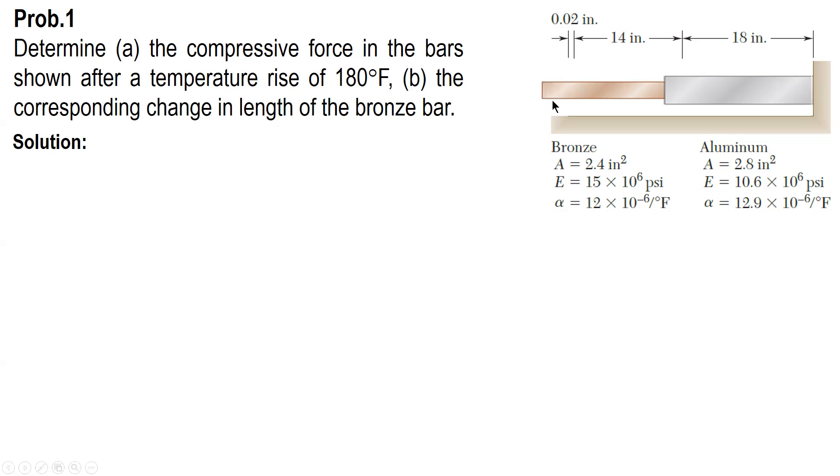So, from the initial position of the bronze bar here, the increase in length is delta T or deformation due to change in temperature. And the value of this is the total deformation of bronze and aluminum.